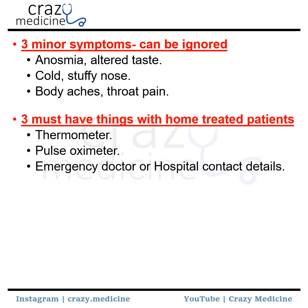Then, 3 must-have things for home-treated patients or patients in home isolation: a thermometer, a pulse oximeter, and contact of an emergency doctor or hospital. They should use the thermometer for constant measurement of temperature and maintain a temperature chart every 8 hours at home. With the pulse oximeter, they should check saturation at home, and in case of saturation fall or new symptoms, contact their emergency doctor or nearby hospital.